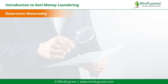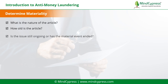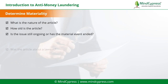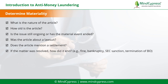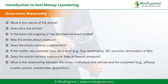To determine materiality, one should ask the following questions: What is the nature of the article? How old is the article? Is the issue still ongoing or has the material event ended? Was the article about a lawsuit? Does the article mention a settlement? If the matter was resolved, how did it end — for example, fine, bankruptcy, SEC sanction, or termination of beneficial owner? Does the article mention substantial fines or lawsuit amounts? What is the relationship between the entity or individual that alerted and the customer — for example, affiliate, trustee, parent, shareholder, or guarantor?